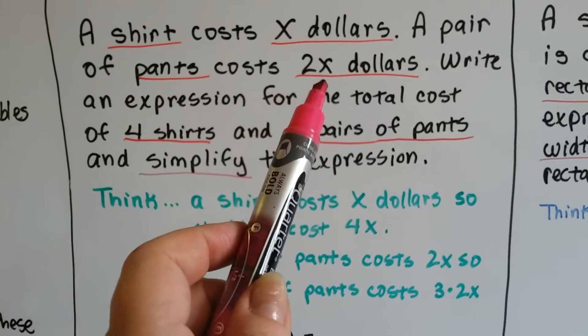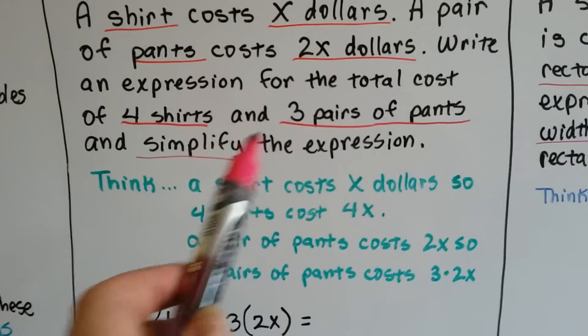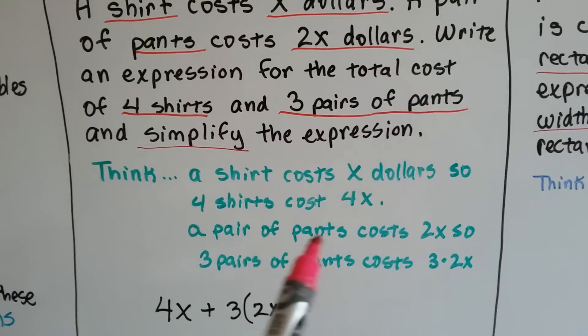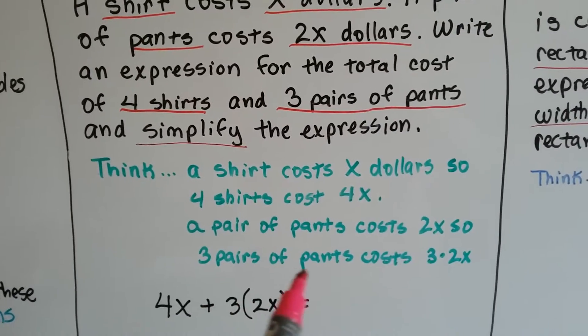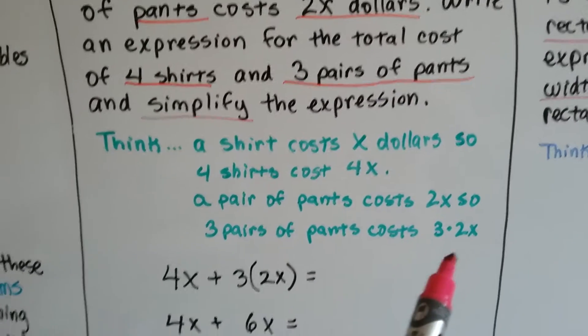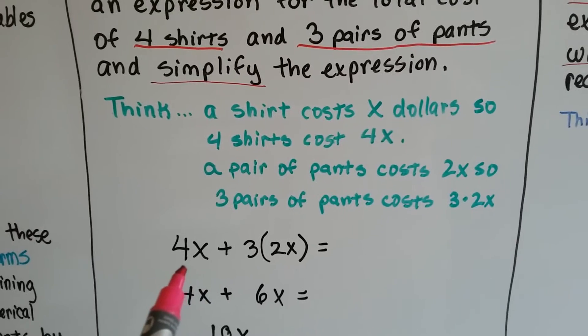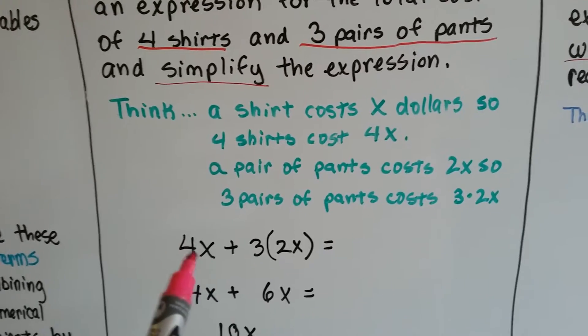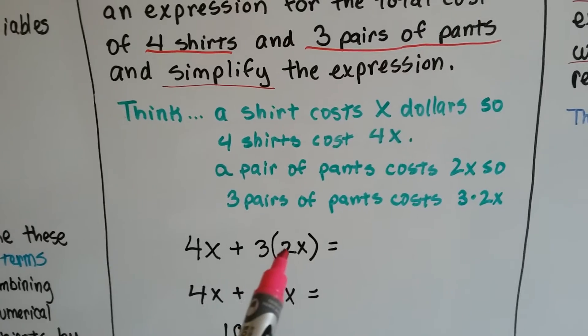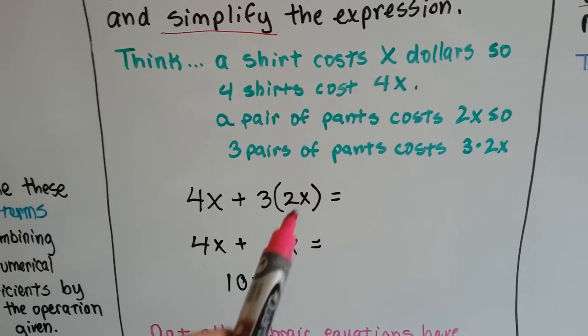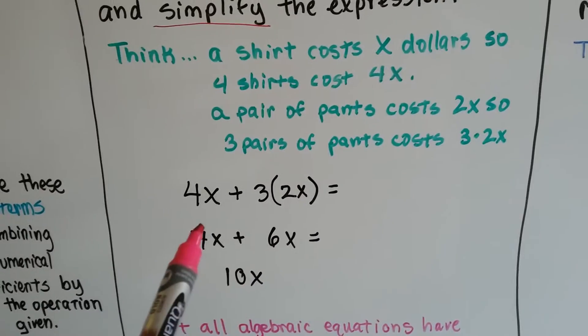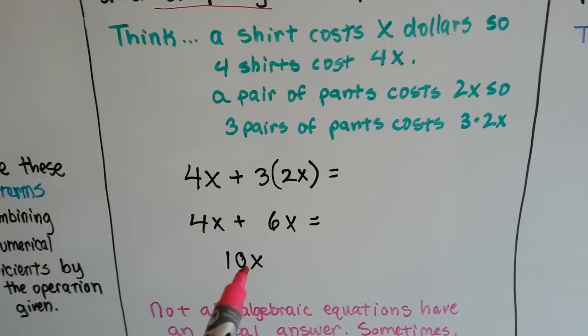It says that a pair of pants costs 2x, but there's 3 of them. So a pair of pants costs 2x, so 3 pairs of pants would be 3 times 2x. Our expression would be, or equation would be, 4x plus 3 times 2x. Well, 3 times 2x is 6x, and if we had 4x and 6x, we'd have 10x.